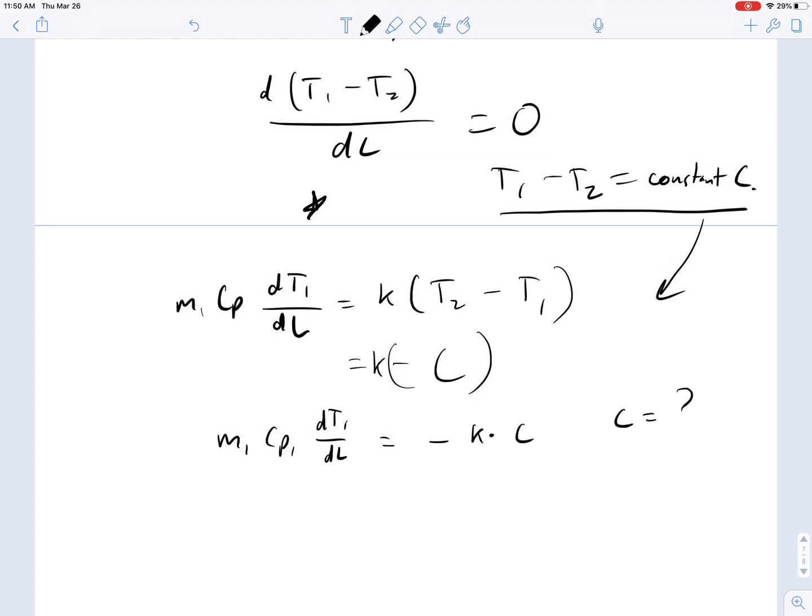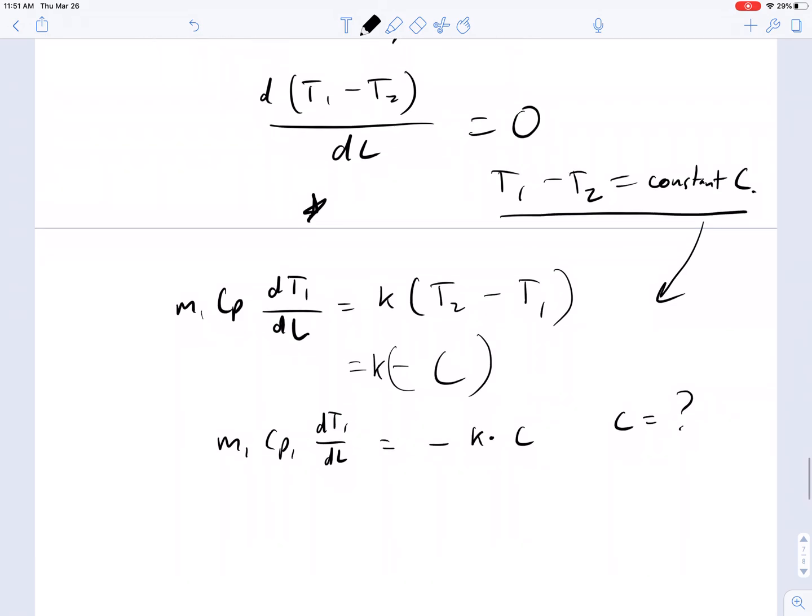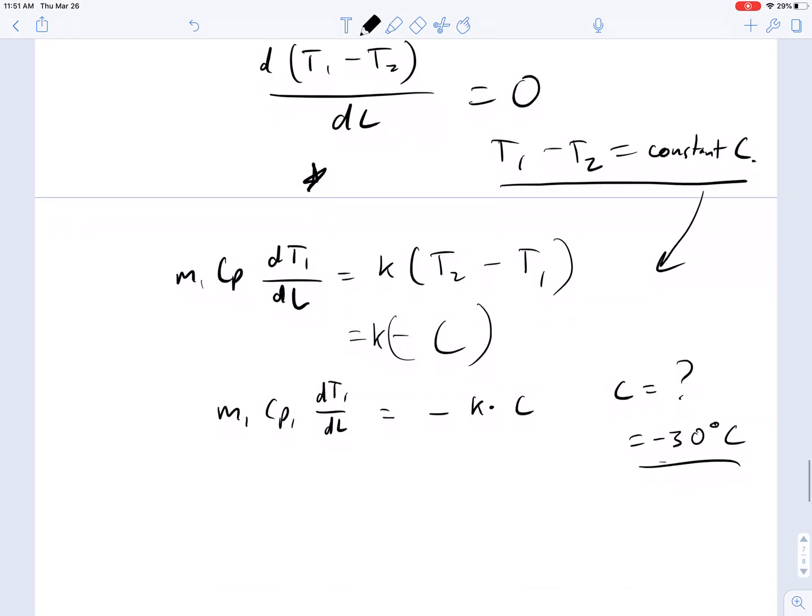What is C? Well, for this problem, C is equal to T1 minus T2, and this is going to be equal to 30 degrees C. If you just take a look at your diagram to see how that is.